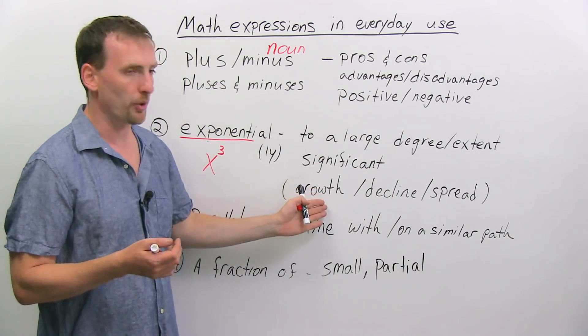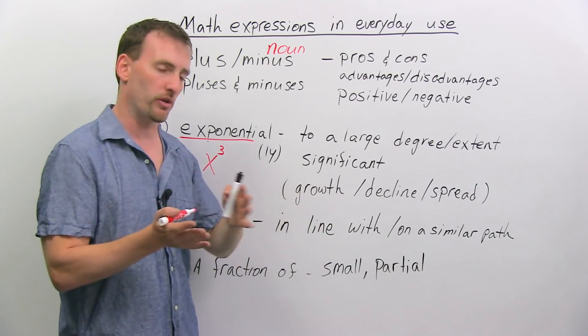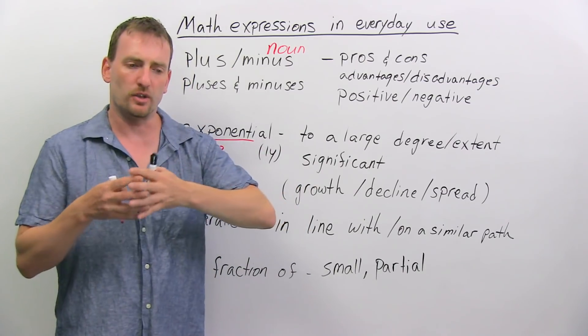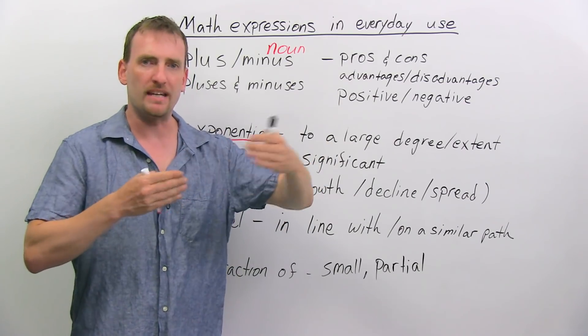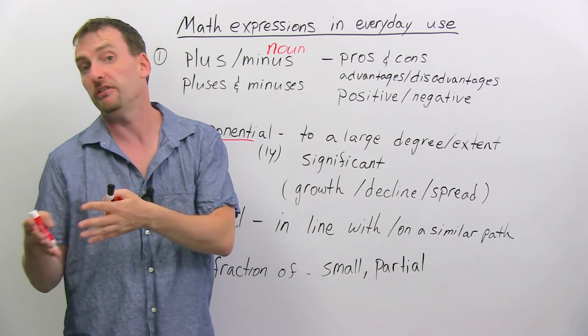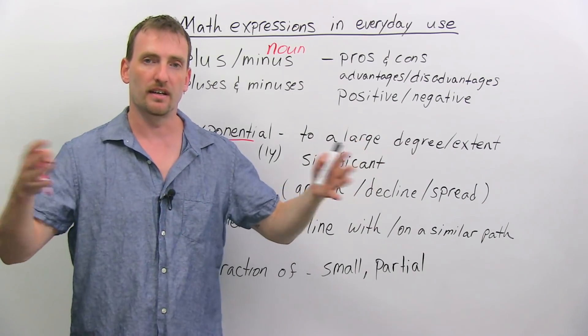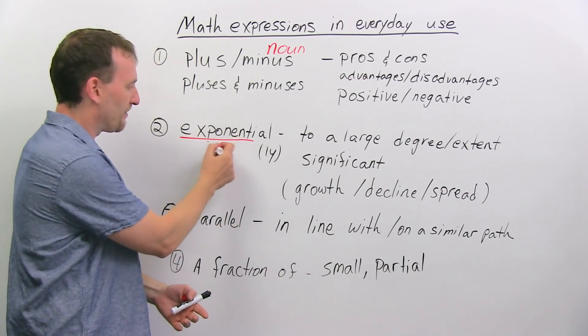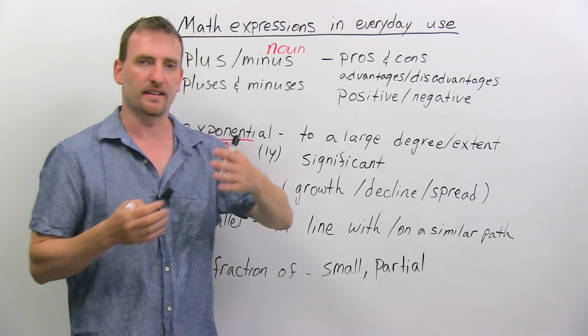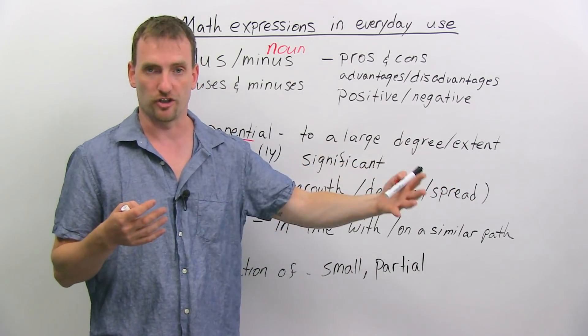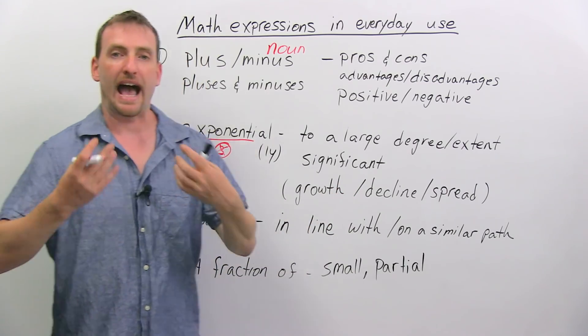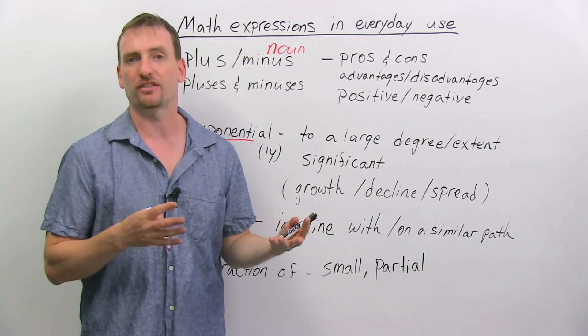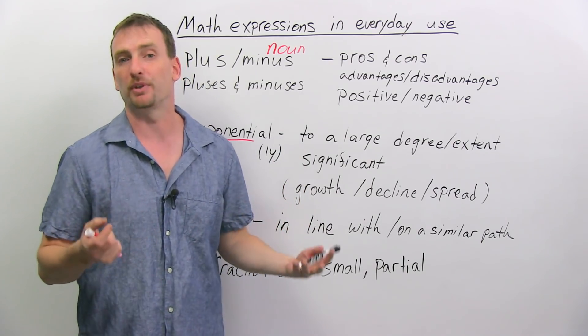We're talking about growth, so exponential growth, or the opposite, exponential decline, or an exponential spread. So it means something is going to increase by many times, or decrease by many times, or spread very quickly. Now, when we say exponential, there's no number to it. We don't actually have this number here. We're just saying that it's going to be very fast, very large. So after World War II, the economies of most Western nations grew exponentially.